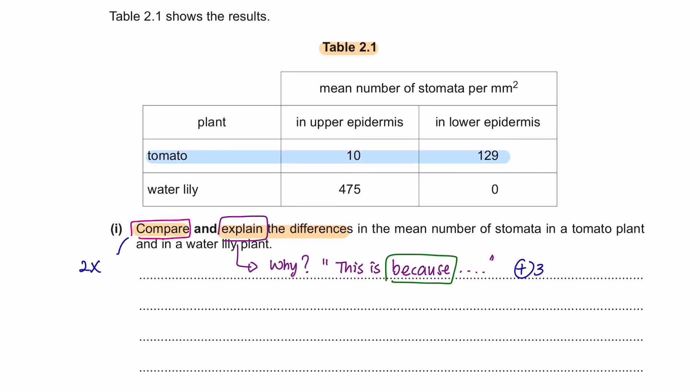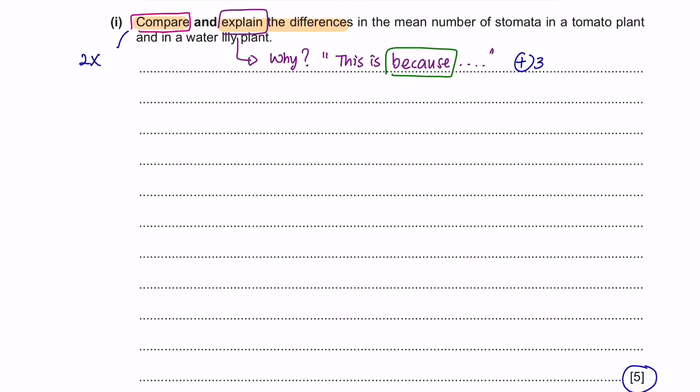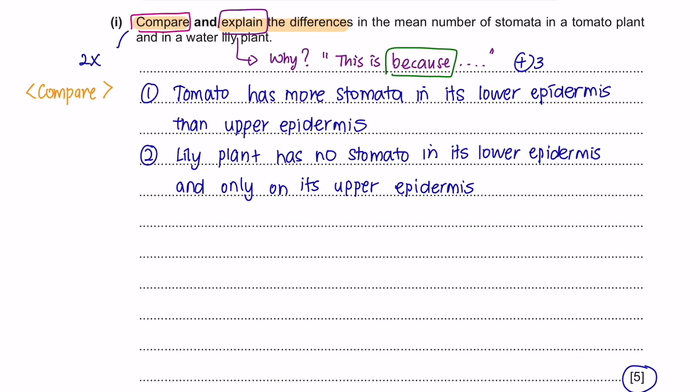Alright, so let's compare first. For tomato plant, there is significantly a very high number of stomata in its lower epidermis compared to the upper epidermis. Whereas for water lily, there are zero number of stomata in its lower epidermis and a very high number of stomata in the upper epidermis. So we are going to write these points as our comparison. After stating the difference as the comparison, now we have to explain why. So we'll first explain, the function of the stomata on a leaf is to allow carbon dioxide to enter and to allow oxygen and water to leave. The upper part of the leaf usually receives a high amount of sun compared to the lower part of the leaf. So if the stomata is placed in the lower epidermis, this can prevent water loss from the leaf.